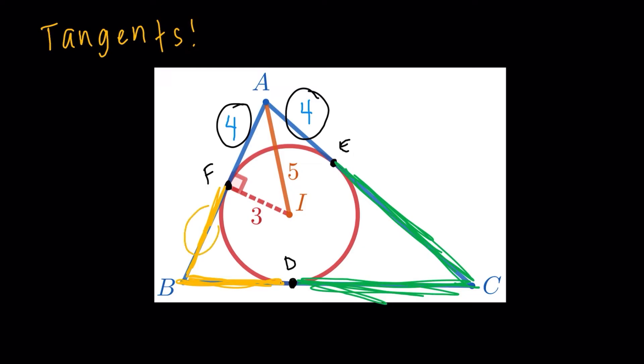and then these two yellow segments, and then these two green segments. Essentially, if I add them all up, that's going to be the perimeter of the triangle.